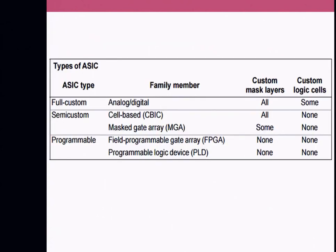A table summarizes the same information: the types of ASIC are full custom, semi-custom, and programmable. In terms of components, analog and RF circuits mostly come into full custom design, whereas semi-custom and programmable are generally digital-based designs. In full custom, customized logic cells are used, whereas in the other types no custom logic cells are involved.